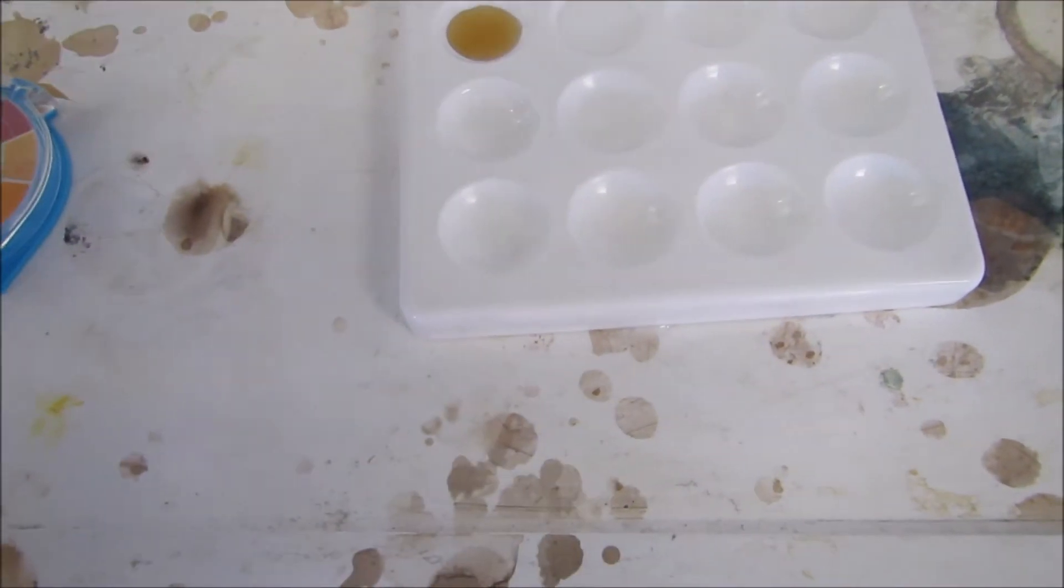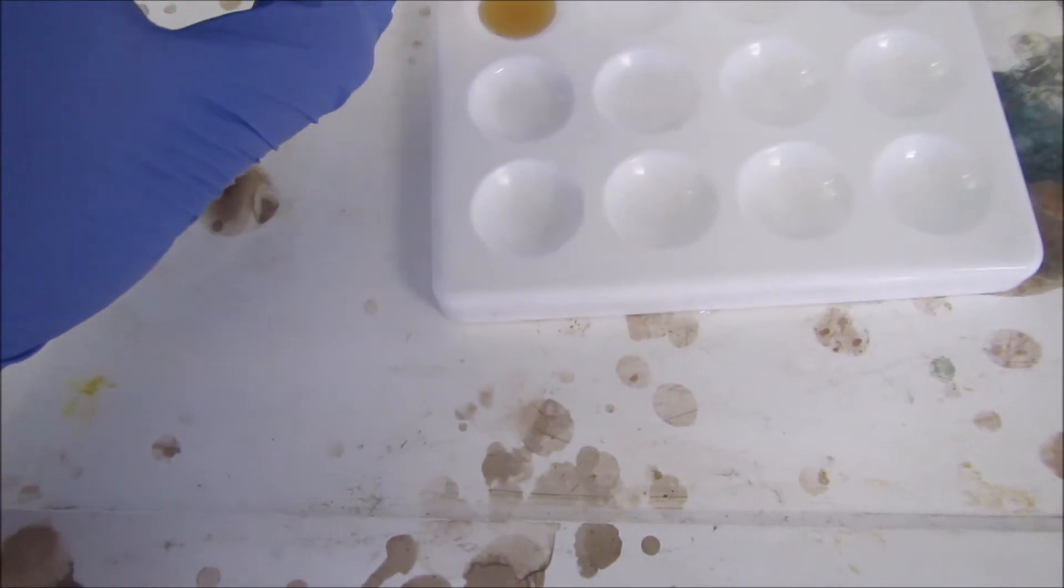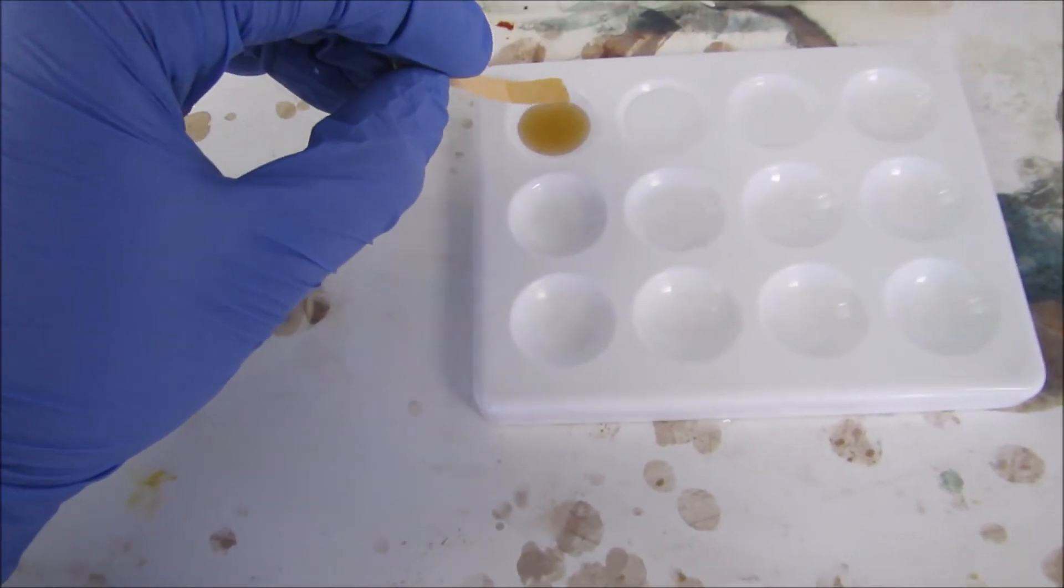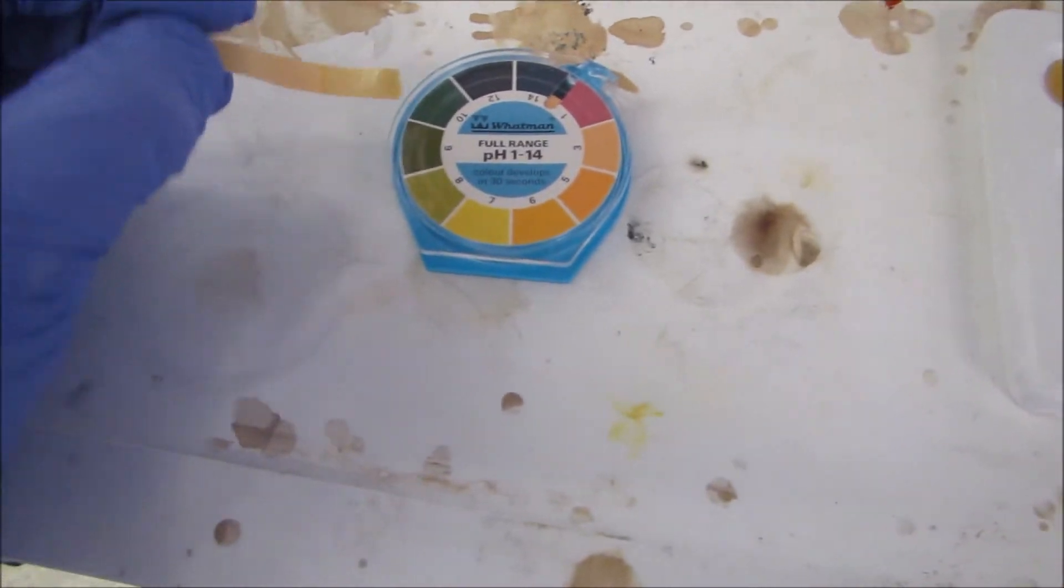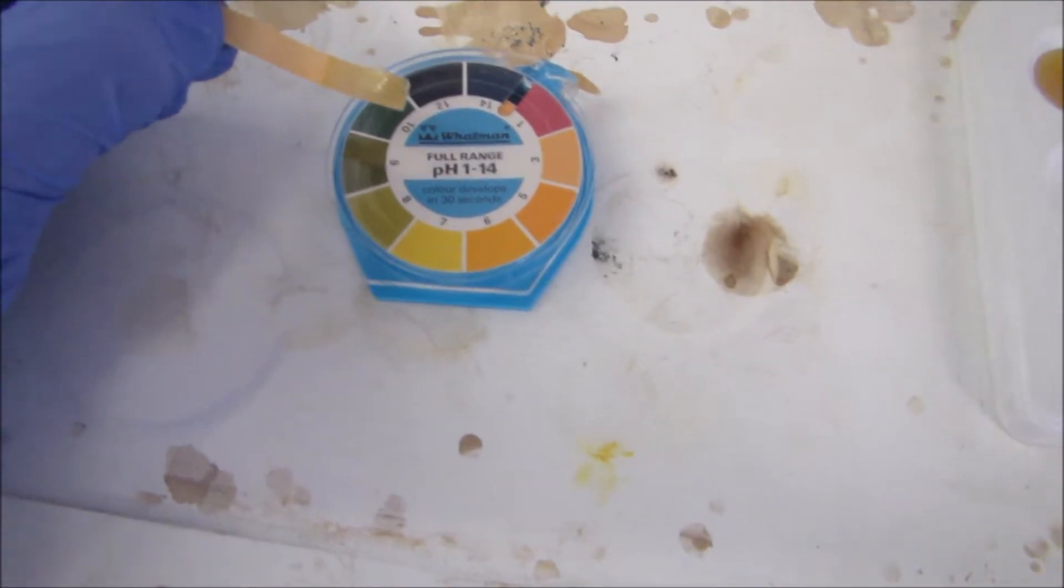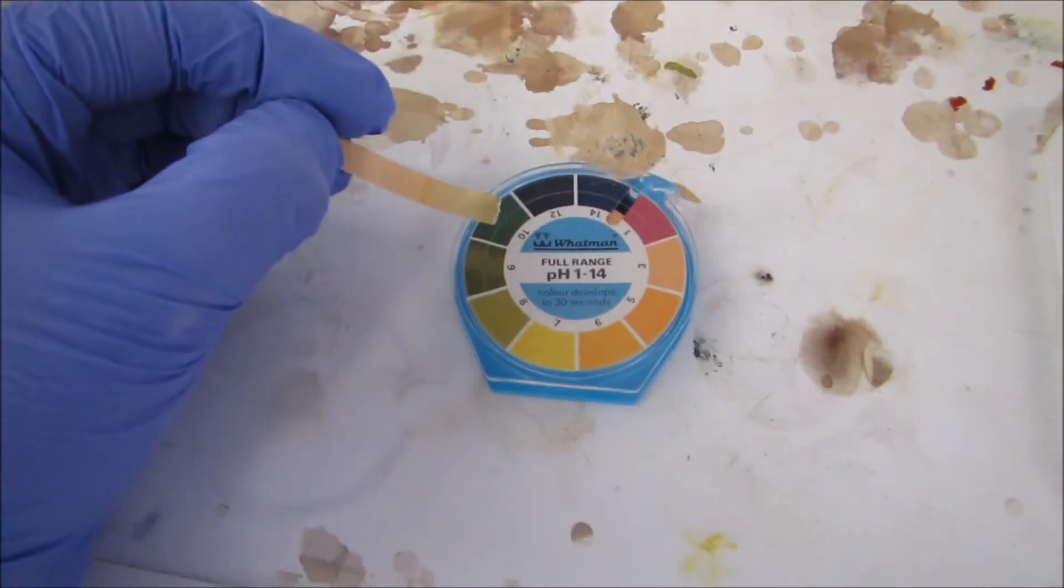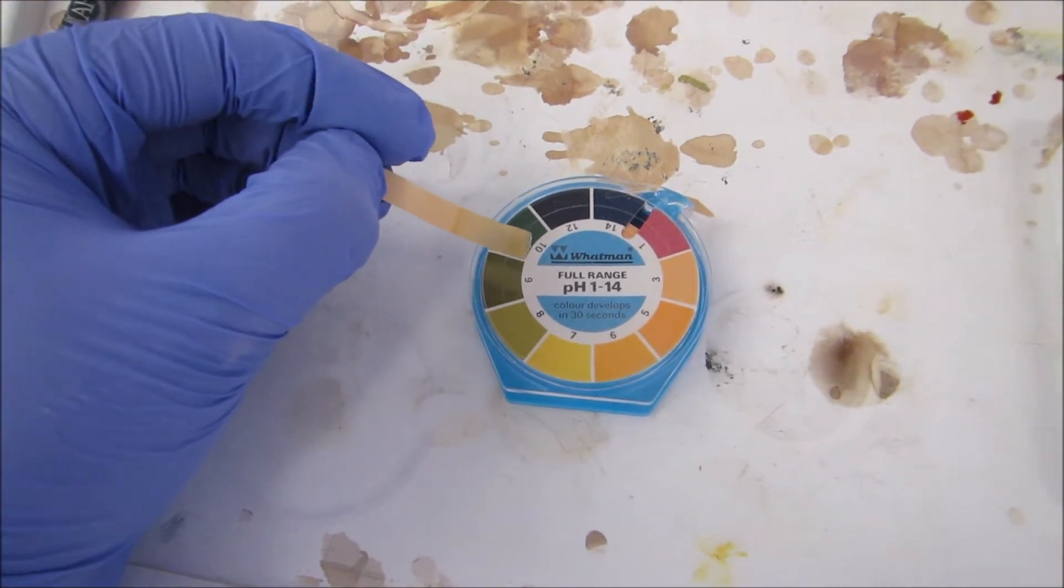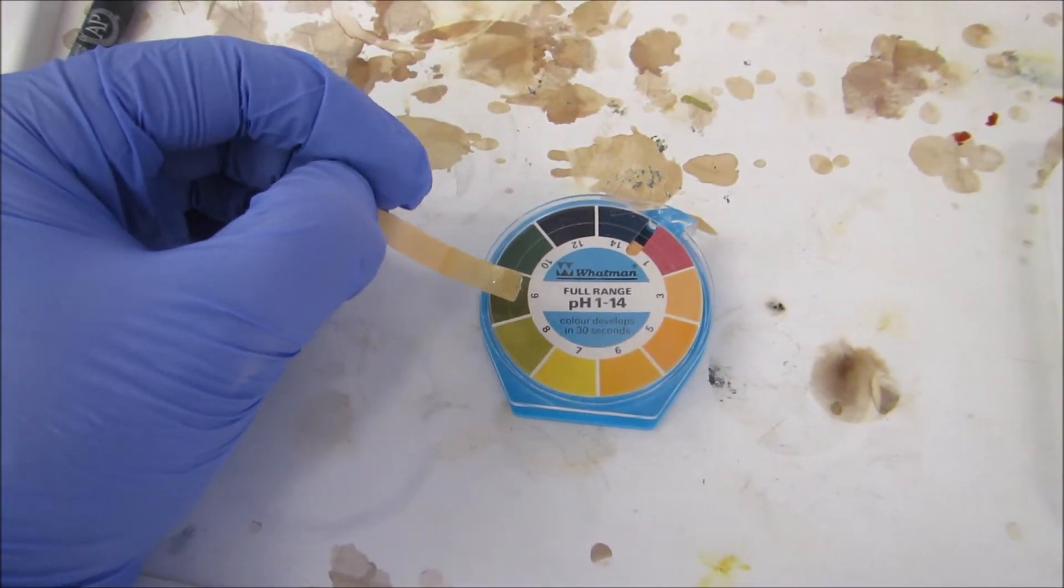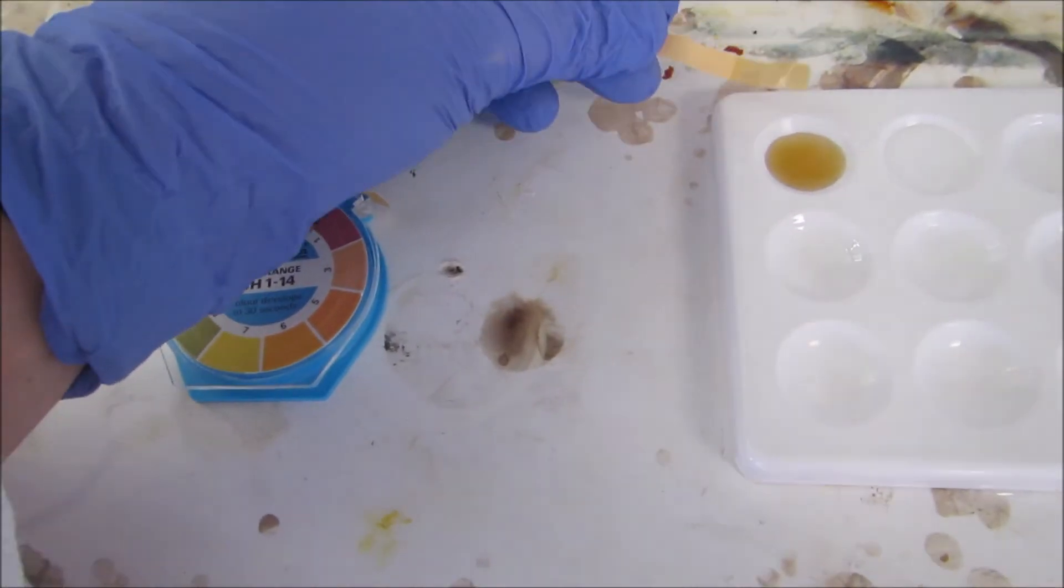First one is the amine. I'm going to put in the pH paper and it's coming up around probably between pH 9 and pH 10, the slight green. This means that it's alkaline.